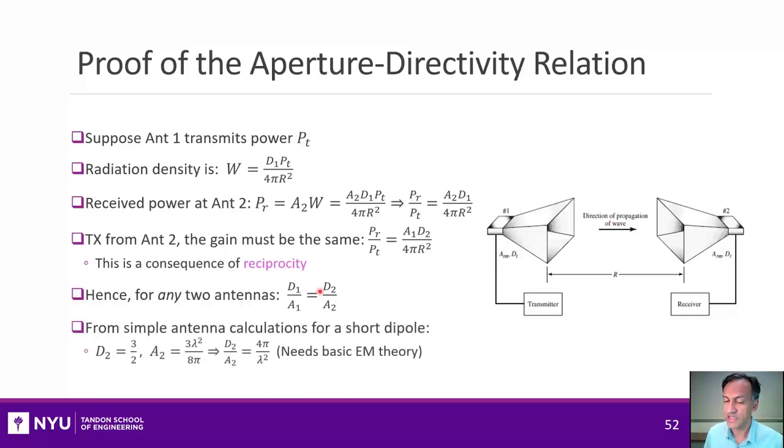Since this applies to any two antennas, I could take an antenna where I can easily compute this directivity and aperture. For example, if you take a short dipole, one of the first calculations you will make in an E&M class is its directivity, its peak directivity, and its aperture. Its peak directivity is 3 over 2, and its aperture is 3 lambda squared over 8 pi. I'm not going to derive them, but you can look them up, for example, in Balanis' book. We just set that on one side of this equation, and we get that the d to a ratio is indeed 4 pi over lambda squared, and that proves our aperture directivity relationship.